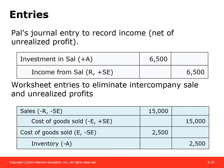Powell uses the equity method, so the journal entry debits investment in SAL and credits income from SAL for $6,500. The eliminating entries are: first, debit sales and credit cost of goods sold for $15,000 to reverse the sale; second, debit cost of goods sold and credit inventory for $2,500 to defer the profit on the inventory remaining on hand.